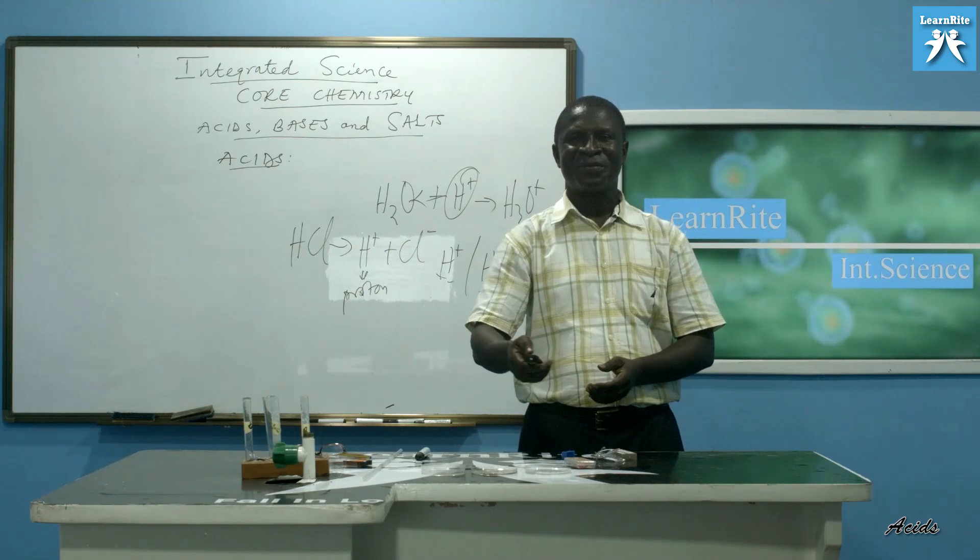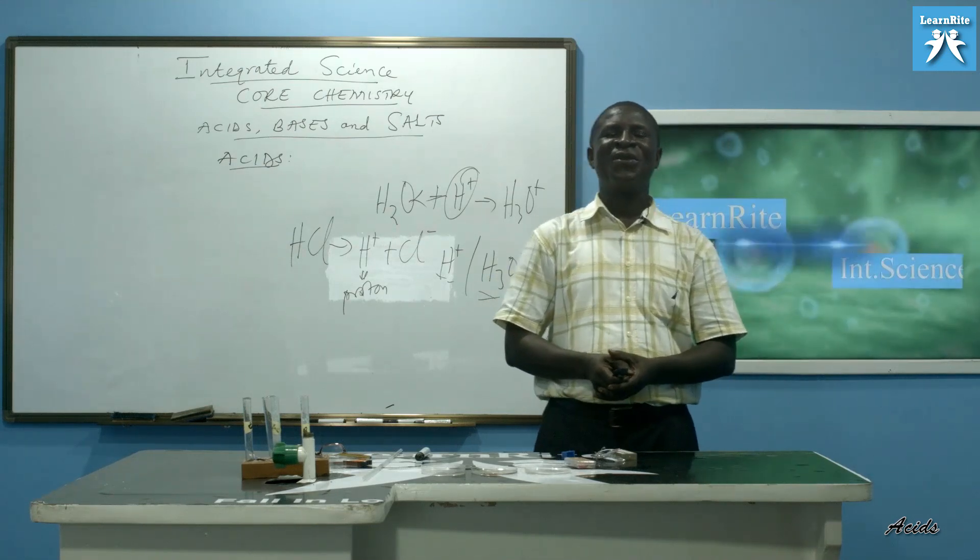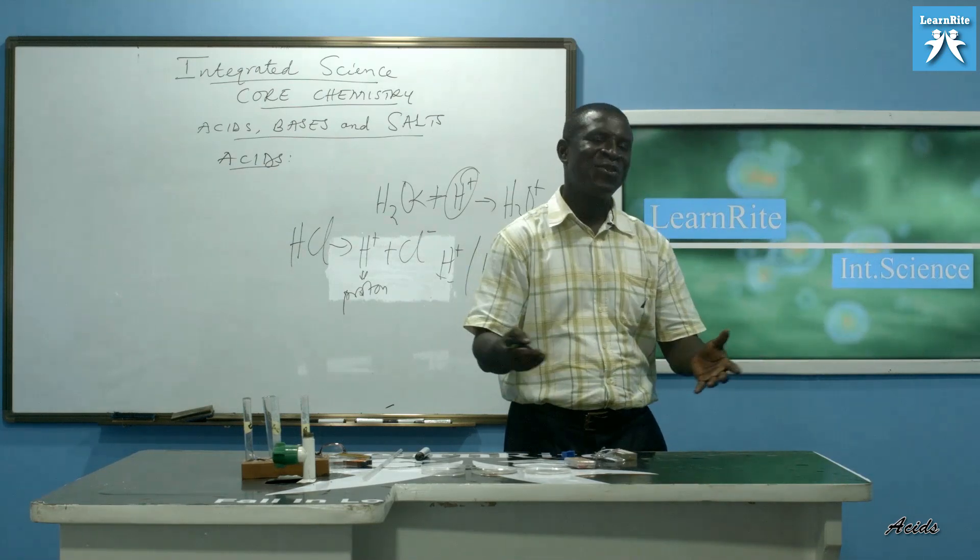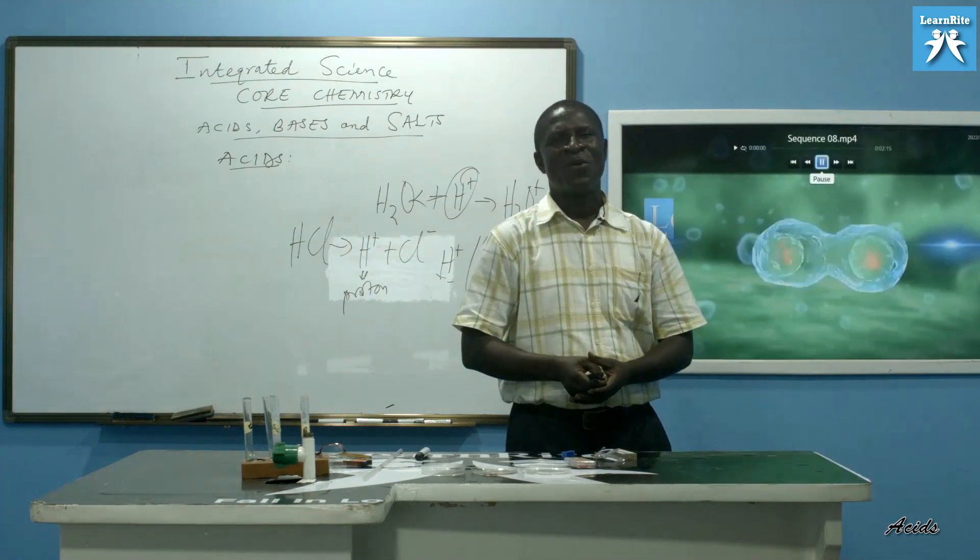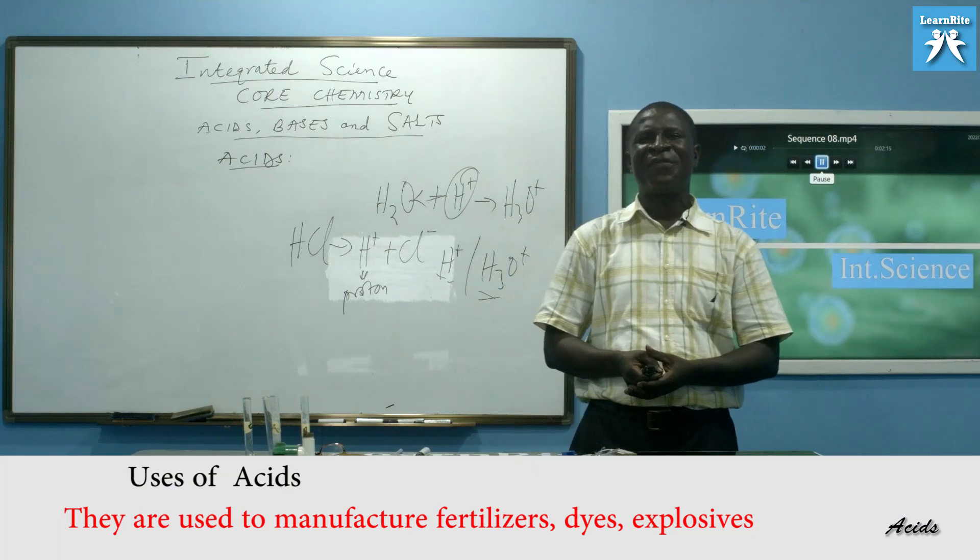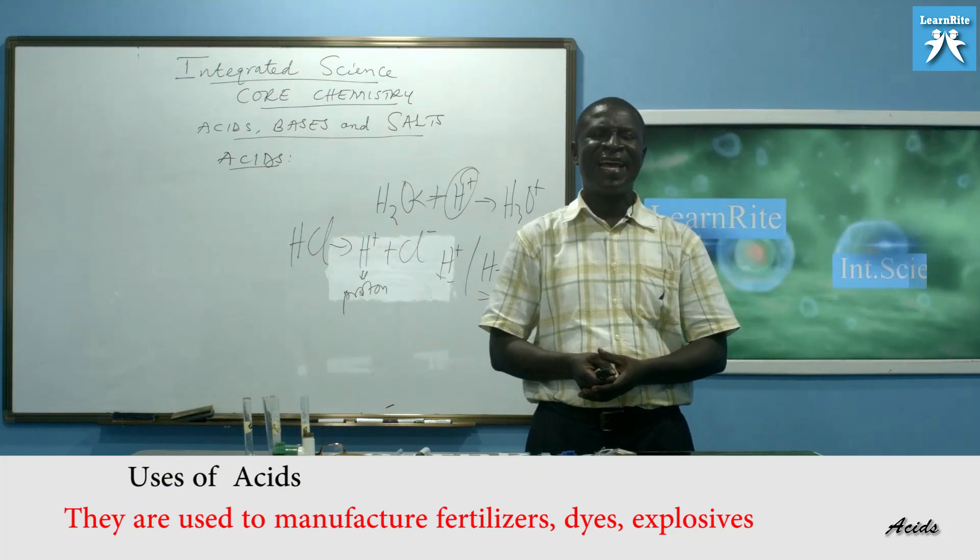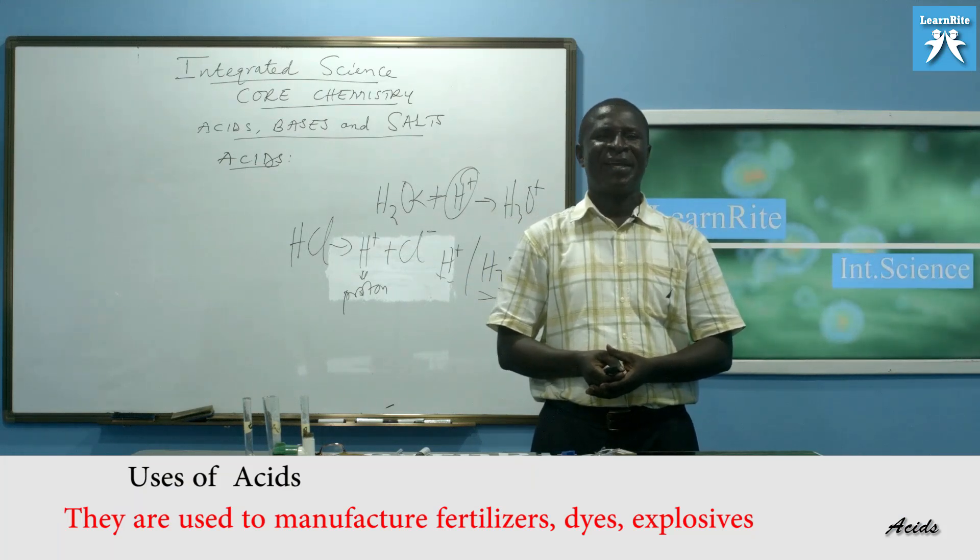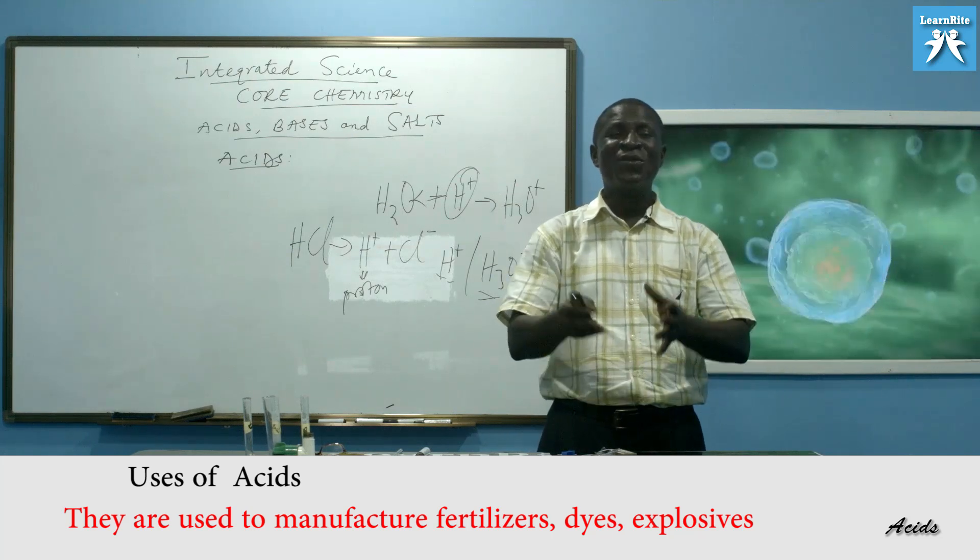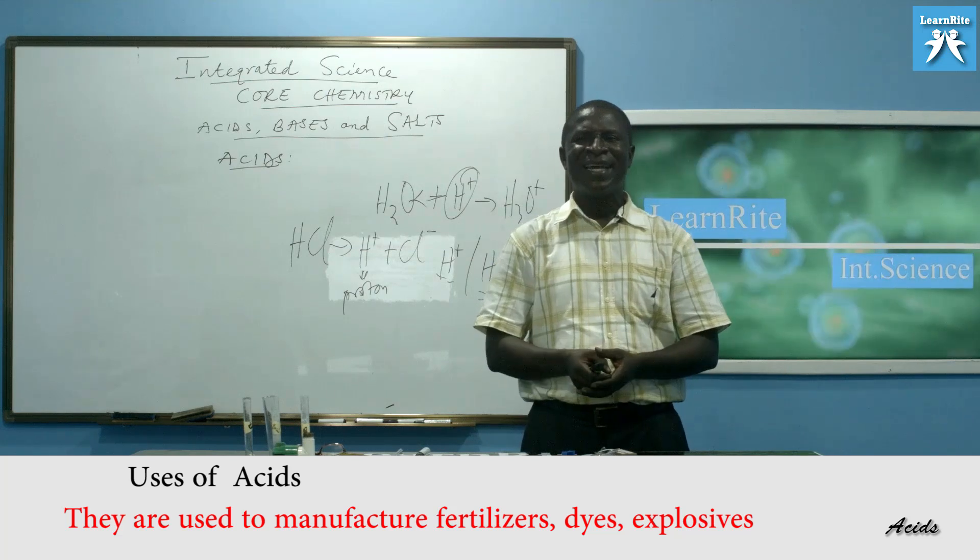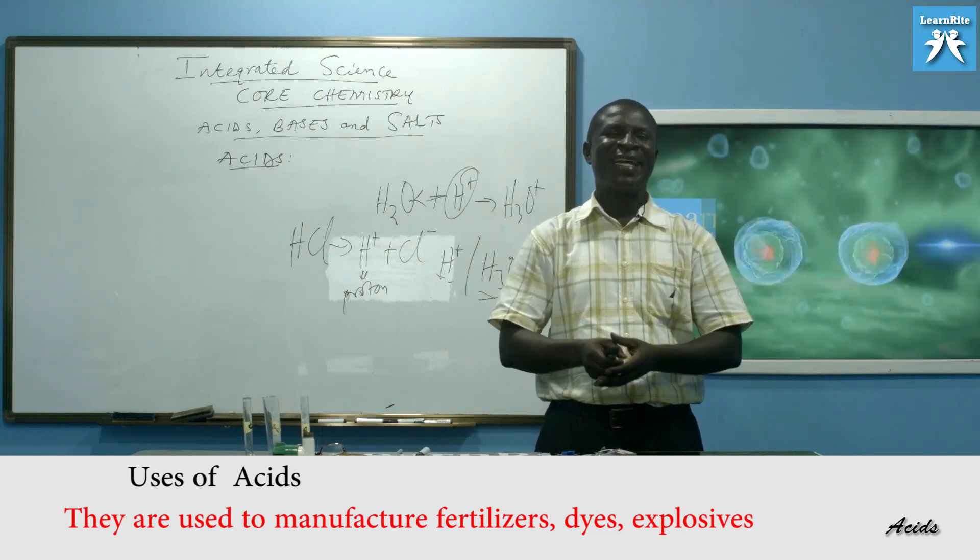Now, we move on. We look at the uses of acids. What are acids used for? How beneficial are acids to us in the environment? One. They are used to manufacture fertilizers. Yes. Like HNO3. We have a fertilizer called ammonium nitrate. It looks like sugar. So, that is it.